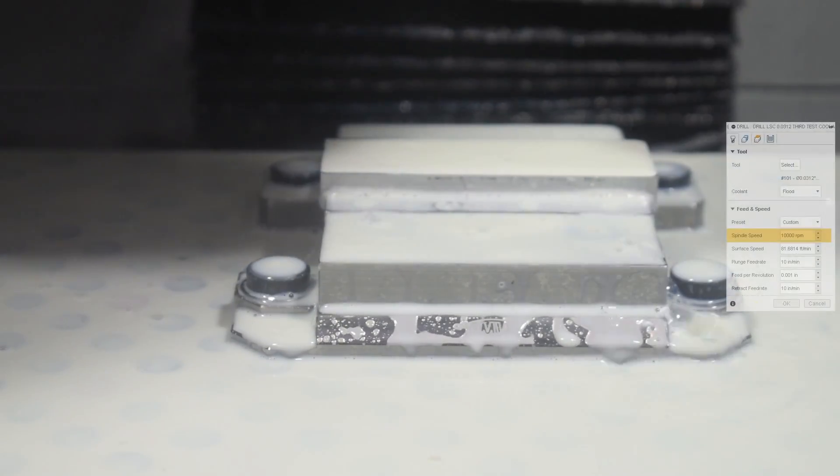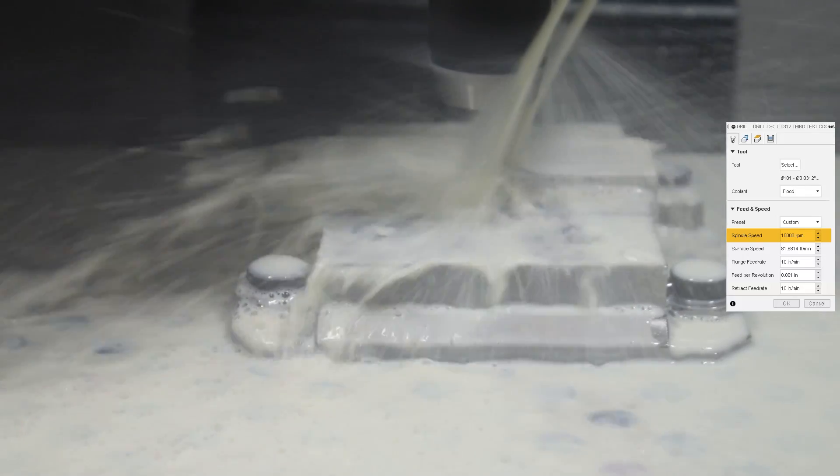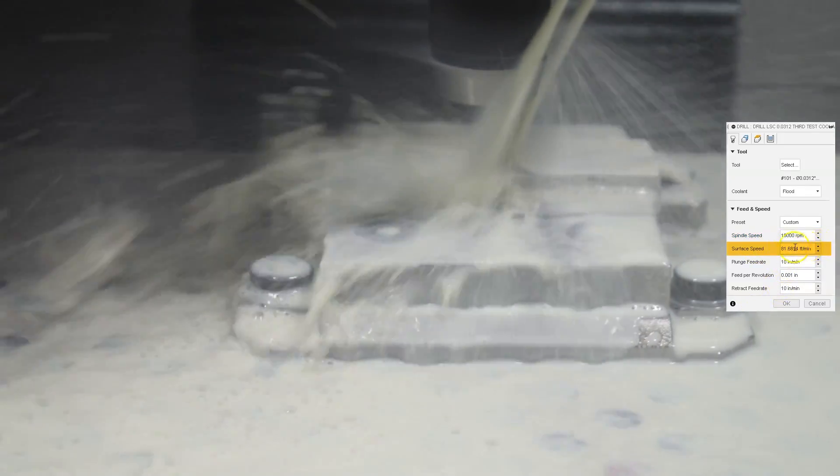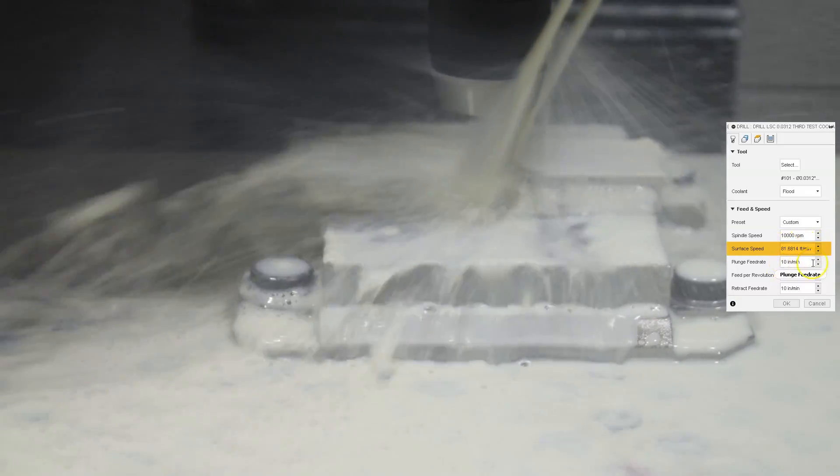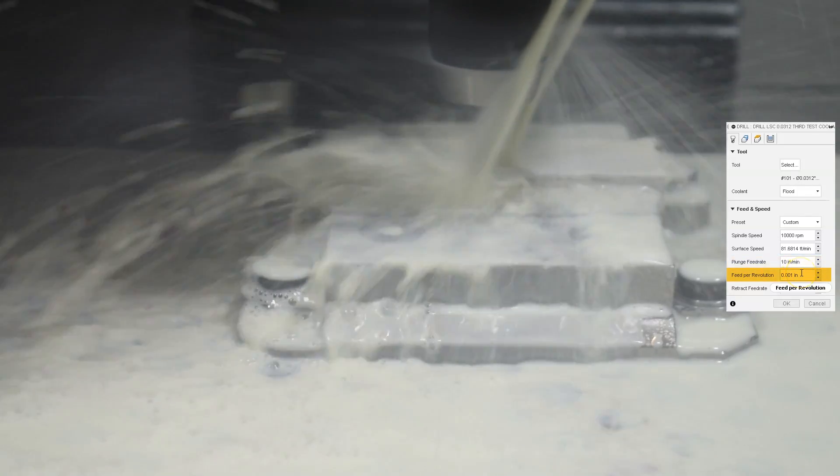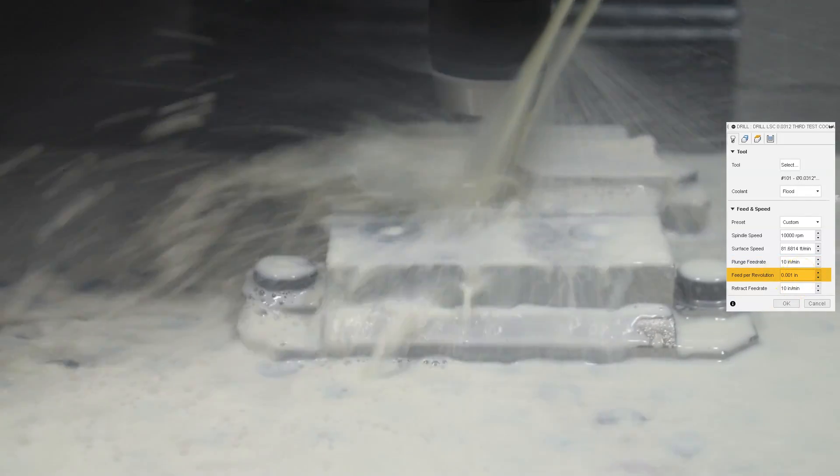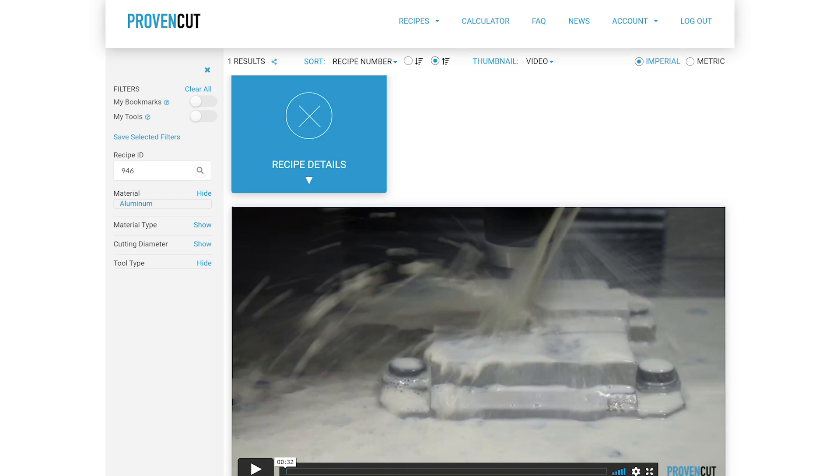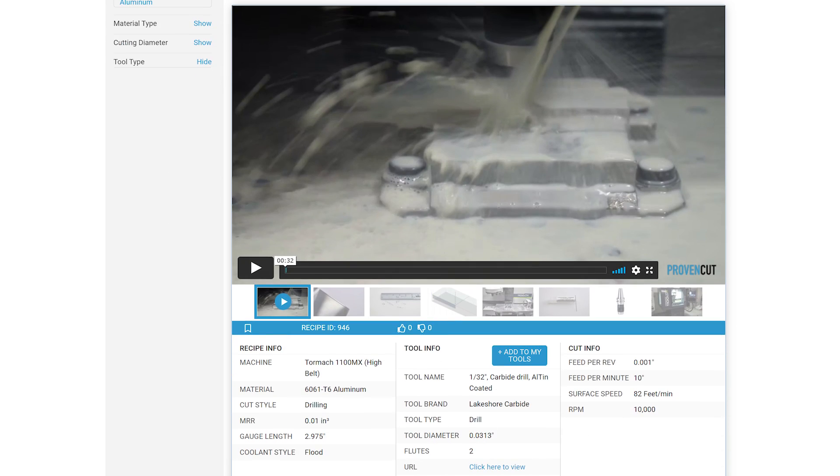My spindle speed is 10,000 rpm. It's the max rpm for the 1100MX and that gives me a surface feet of 81 feet per minute with a plunge feed rate of 10 inches per minute giving me a feed per rev of one thousandth of an inch. And that recipe ran beautifully and I was able to turn that into a proven cut recipe number 946.